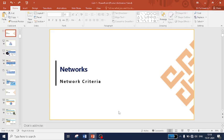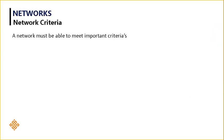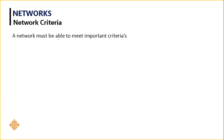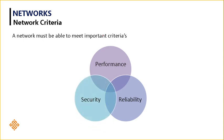Good morning students. In this video, I will be discussing what are the criteria to form a good network. A network must be able to meet a few important criteria to say that the network is good. The first one is performance, the second one is reliability, and the last one is security. These are the three important parameters that need to be satisfied. Let's see what performance, reliability, and security mean, one by one.